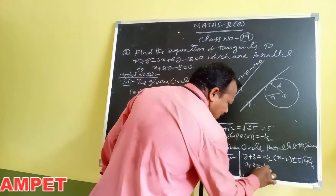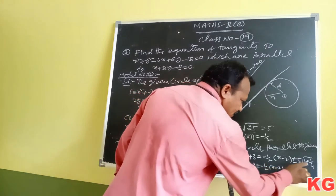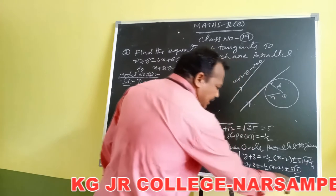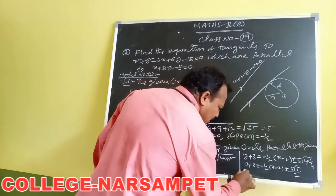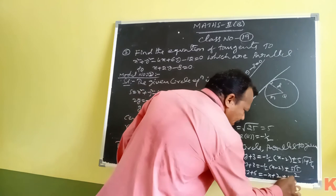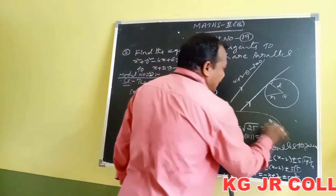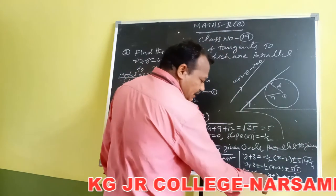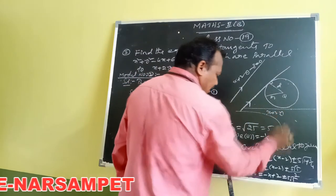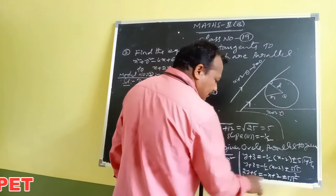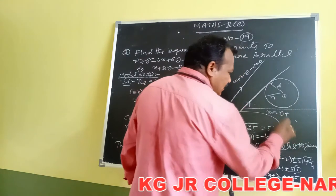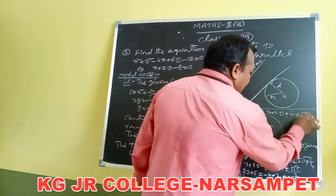In simplification: y plus 3 equals minus 1 by 2 of x minus 2, plus or minus 5 into root of 1 plus 1 by 4. Taking LCM 4: 4 plus 1 equals 5, so under root of 5 by 4, root 4 equals 2. Taking the 2 across by cross multiplication, 2y plus 6 equals minus x plus 2 plus or minus 5 root 5. Separating variables, taking x plus 2y to the LHS: x plus 2y, and constants: 2 minus 6 equals minus 4 or 6 minus 2 equals 4, plus or minus 5 root 5 equals 0.